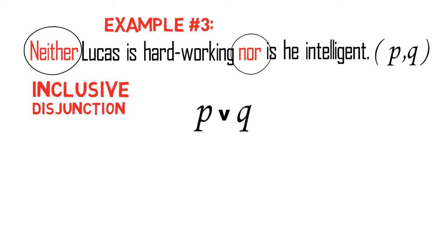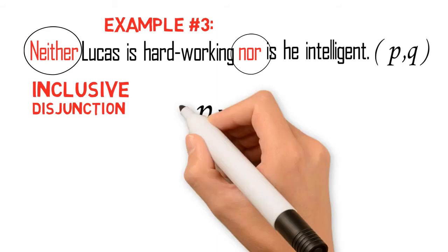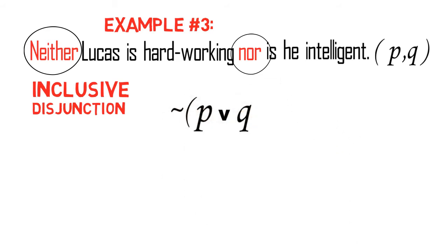Thus, we finally symbolize the proposition Neither Lucas is hardworking nor is he intelligent as ~(P v Q).